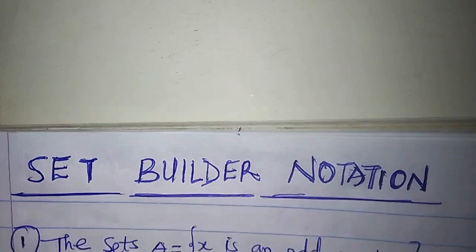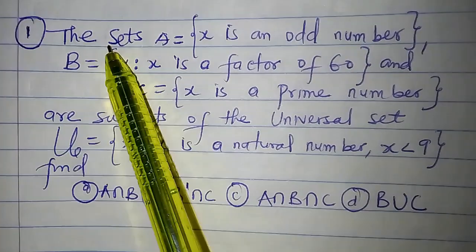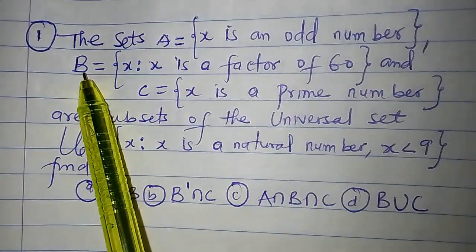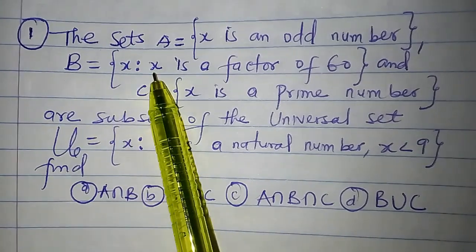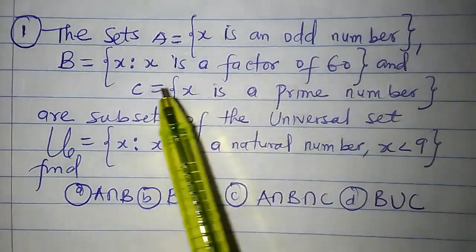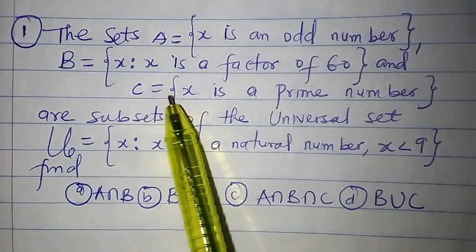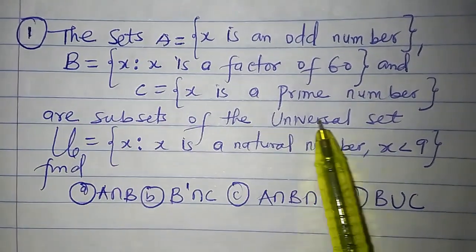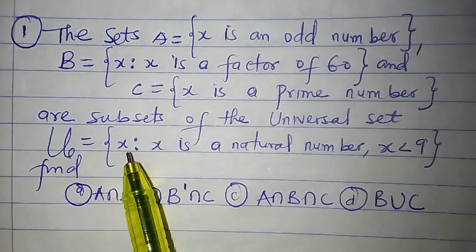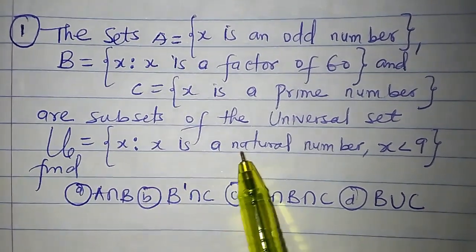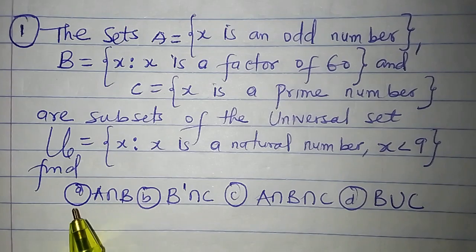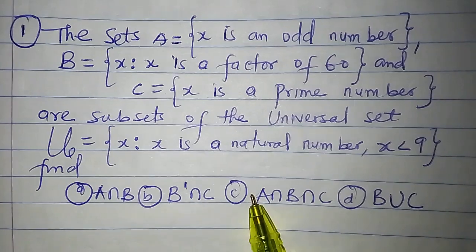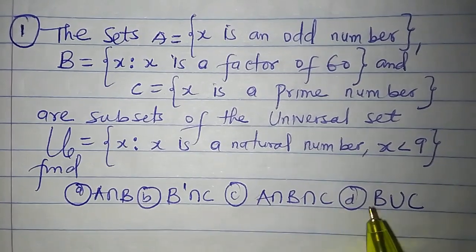We have two questions here. The first question: Set A is the set of numbers X such that X is an odd number. B is the set of numbers X such that X is a factor of 60. C is the set of numbers X such that X is a prime number. A, B, and C are subsets of the universal set, which is the set of numbers X such that X is a natural number less than 9. We are asked to find A intersection B, B complement intersection C, A intersection B intersection C, and B union C.